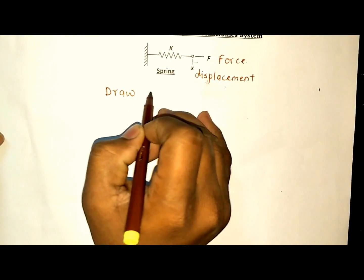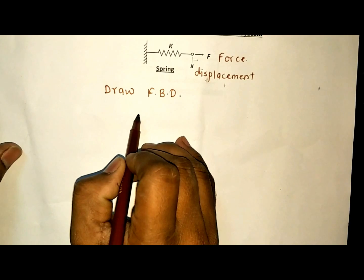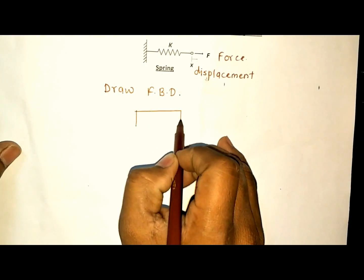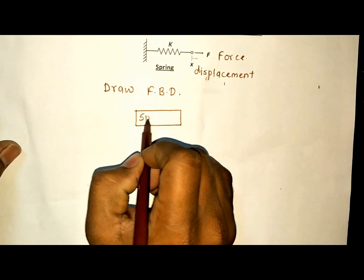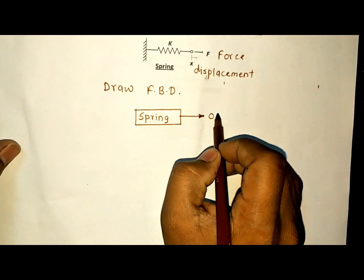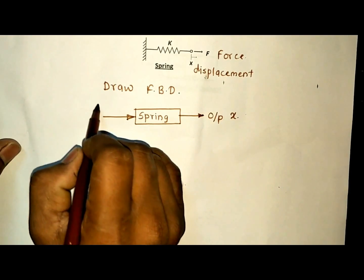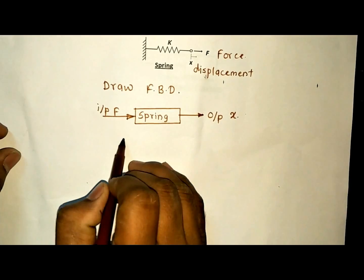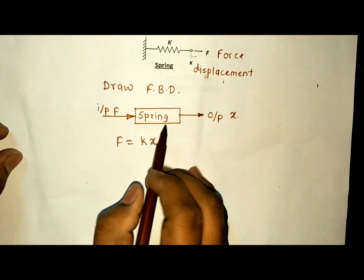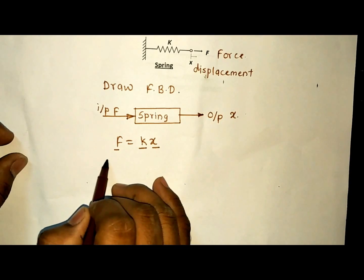The first step is to draw the free body diagram for the spring. The output is displacement X, and the input is the force F. As we know, F is equal to K times X, where K is the stiffness of the spring, X is the displacement, and F is the force.